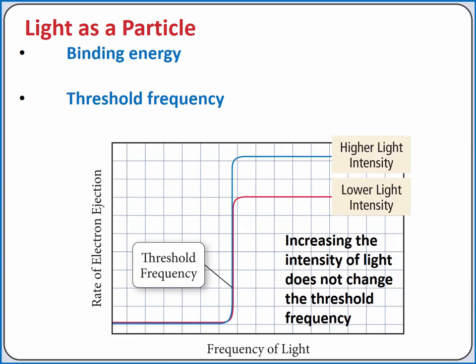The binding energy for a metal is the energy keeping an electron in the metal. This energy must be overcome to eject an electron. When an experiment is run with a photoelectric effect, there is a particular frequency below which no electrons are ejected. This frequency is called the threshold frequency. Above the threshold frequency, electrons are ejected from the metal.